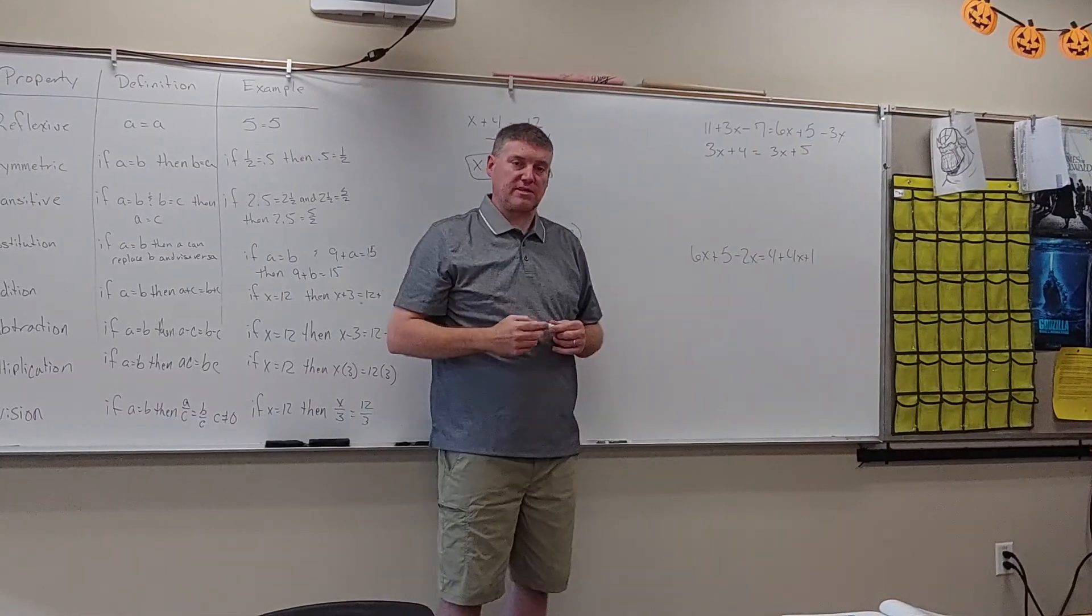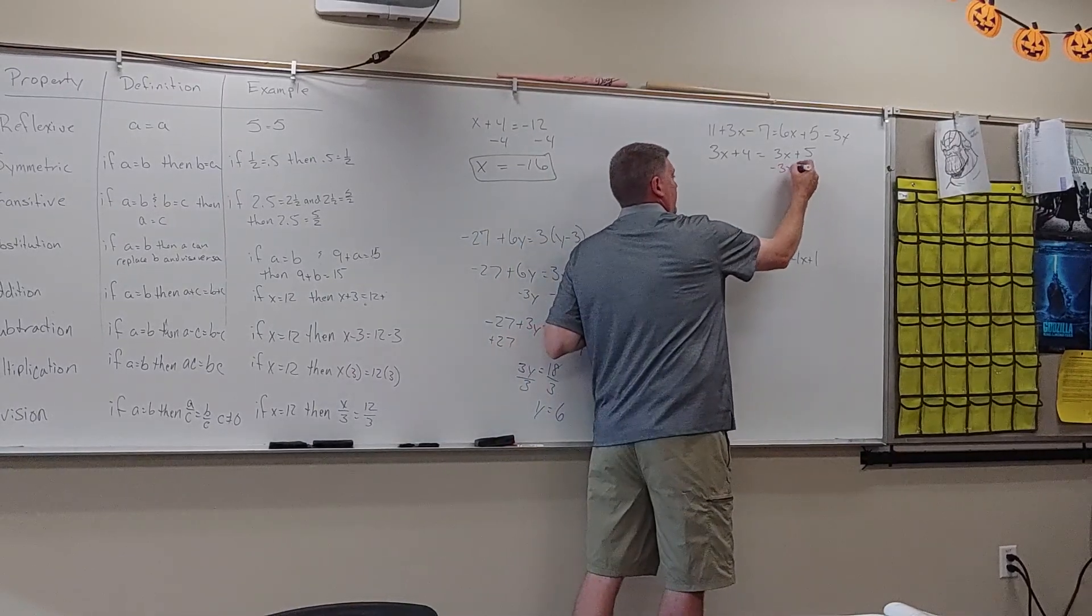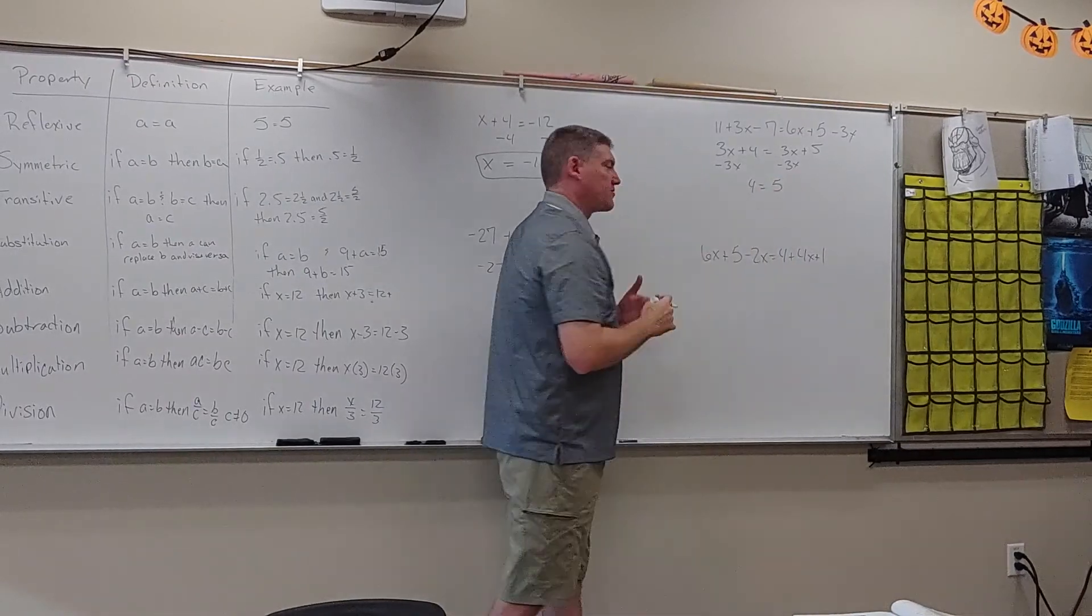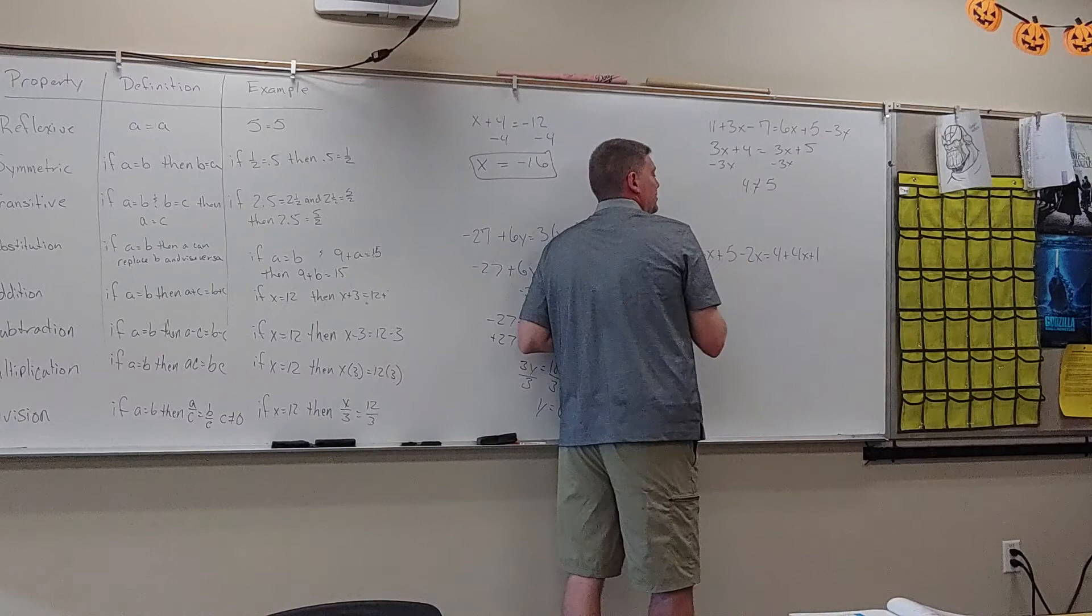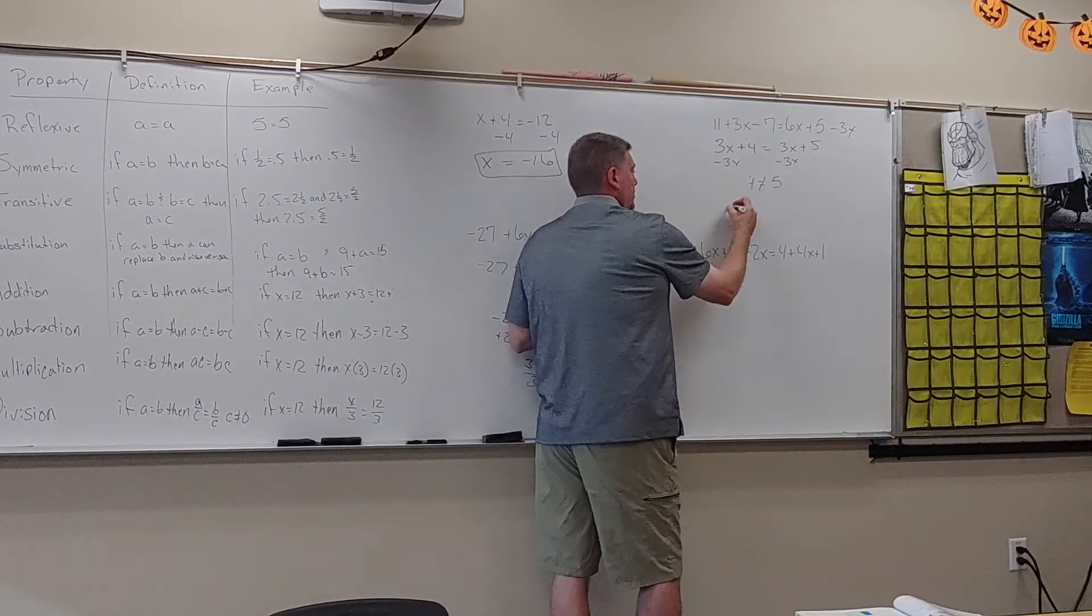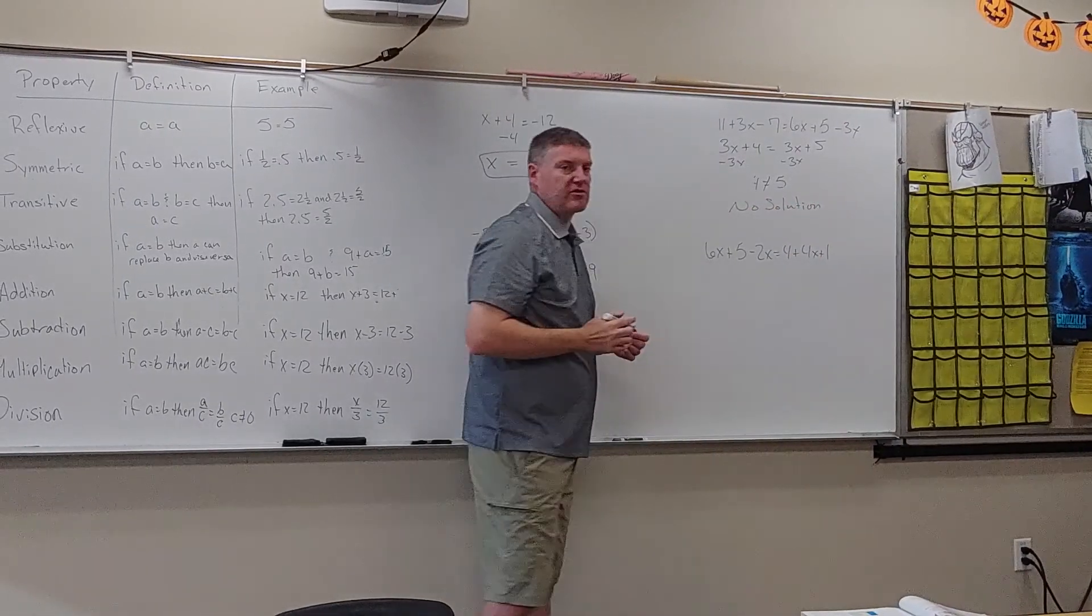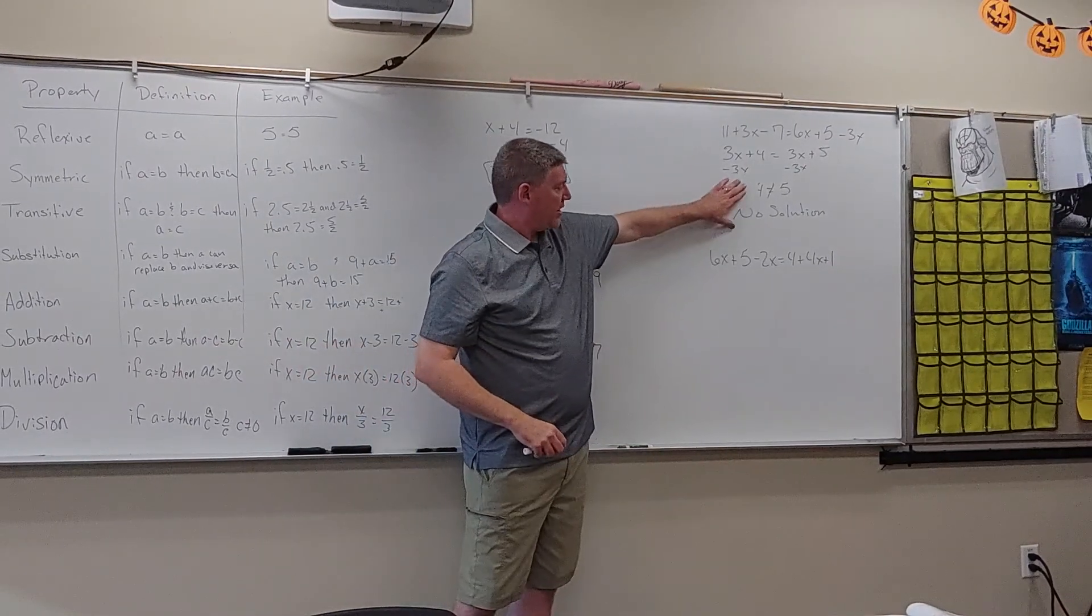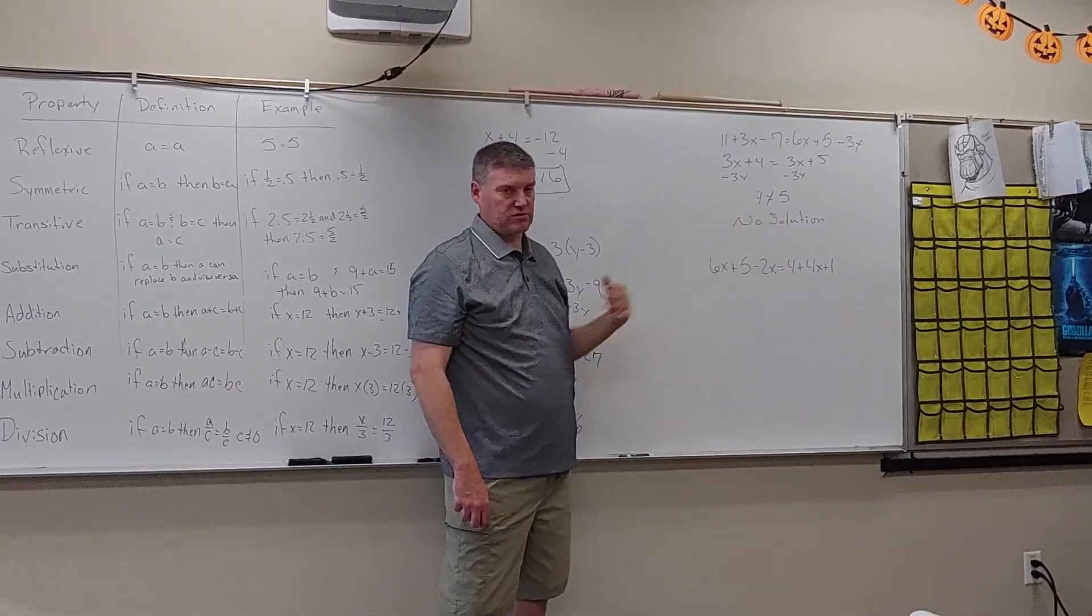Over here, I'm going to combine my like terms. 6X minus 3X gives me 3X plus 5. I'm going to get my variables on the same side. I'm going to subtract 3X from both sides. 4 equals 5. Well, when does 4 equal 5? Never happens. That's not a true statement. So this is an example of no solution. There isn't a value of X that's going to make that work. Anytime I have two constant values that is not the same, no solution.